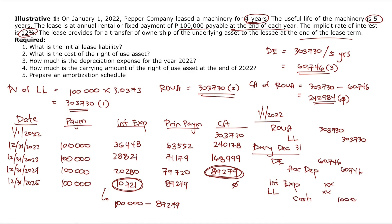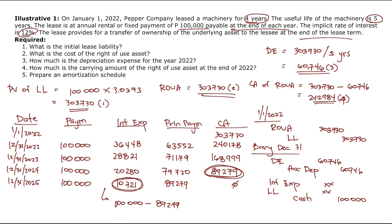To verify using the shortcut: 303,730 × 1.12 − 100,000 = 240,178; × 1.12 − 100,000 = 168,999; × 1.12 − 100,000 = 89,279. The last step will show a small difference of 8 pesos due to rounding of the present value factor, which is why at the last period we force-balance the principal payment instead.